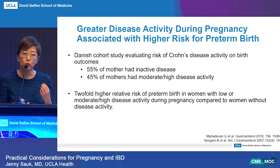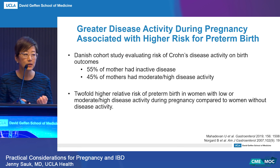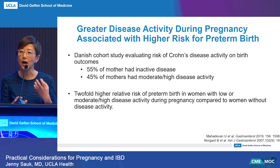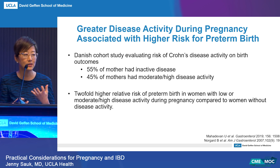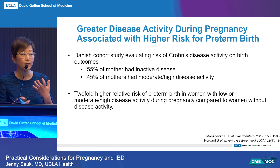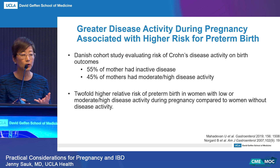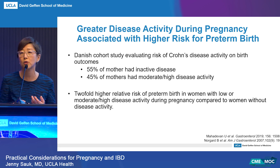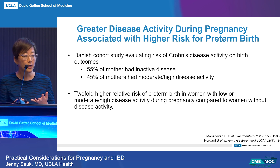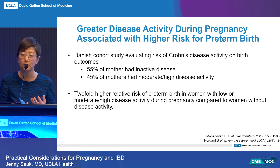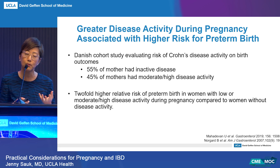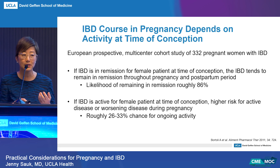We know that greater disease activity during pregnancy is associated with higher risks of adverse events. One Danish cohort study found that 55% of mothers had inactive disease and 45% had moderate to high-risk disease activity. There's a two-fold higher relative risk of preterm birth in women with low or moderate-to-high disease activity during pregnancy compared to women without any disease activity. So it's really important that we try to control disease activity in pregnancy and at the time of conception.